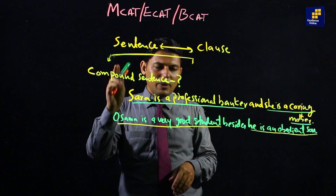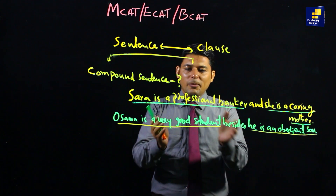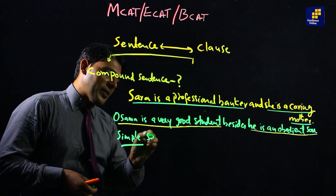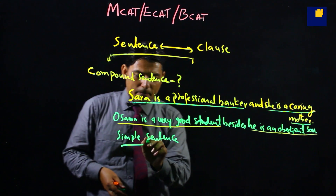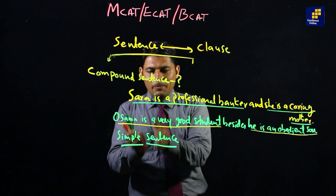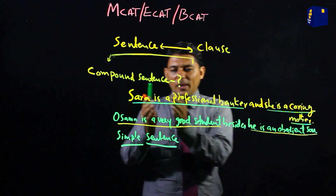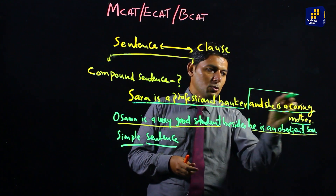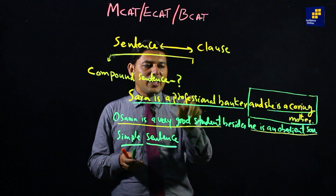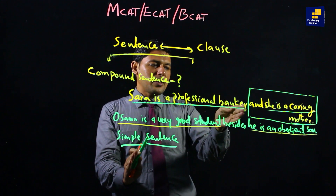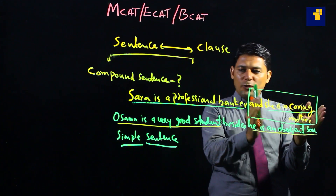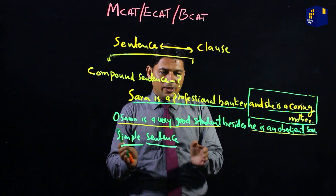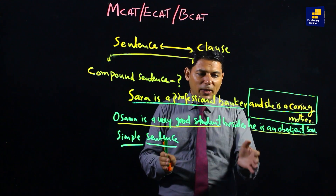This sentence is known as a compound sentence. So on one side we discuss complex sentences, and on the other side compound sentences. The last idea is simple sentences. In fact, simple sentences are very simple — they have just one clause with a subject and predicate part. For example: 'Sarah is a professional banker' — that is just one sentence. Simple sentences have only one class, no more. That is a simple sentence.